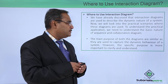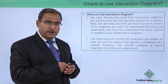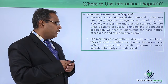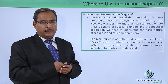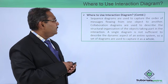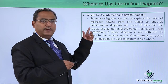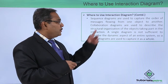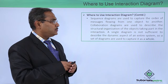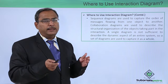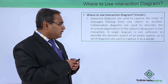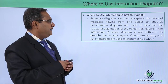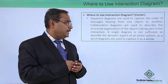The main purpose of both diagrams is similar, as they are used to capture the dynamic behavior of a system. However, the specific purpose is more important to clarify. Sequence diagrams are used to capture the order of message flowing from one object to another. On the other hand, collaboration diagrams are used to describe the structural organization of the objects taking part in the interaction. A single diagram is not sufficient to describe the dynamic aspect of the entire system, so a set of diagrams are used to capture it as a whole.